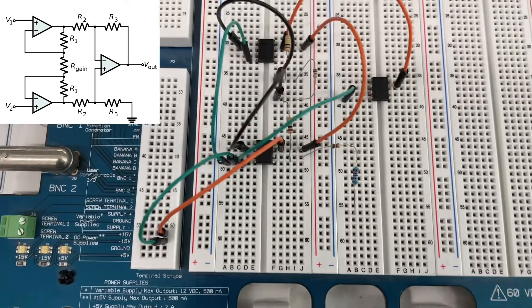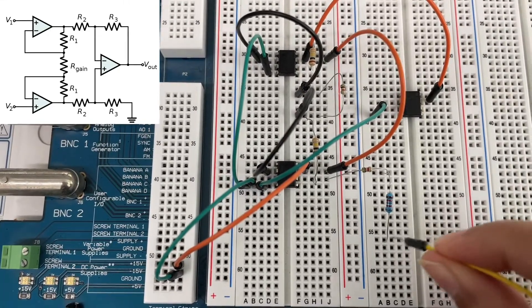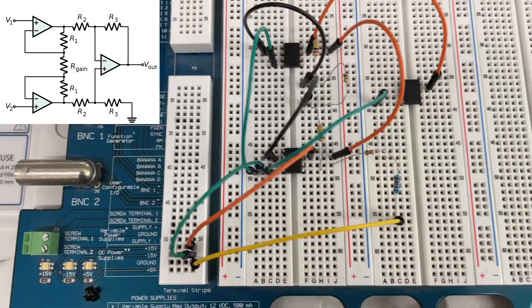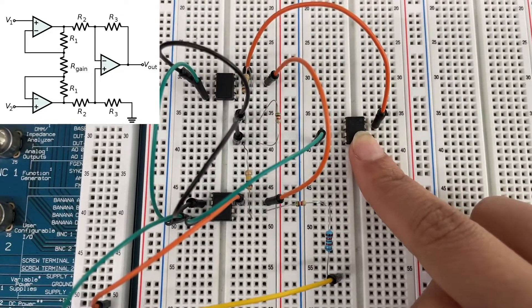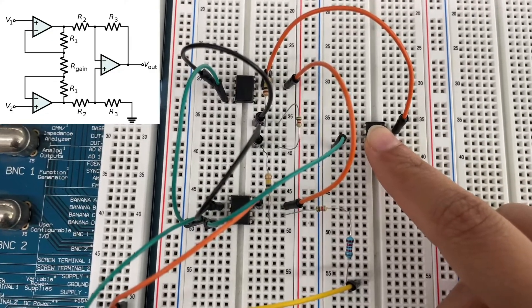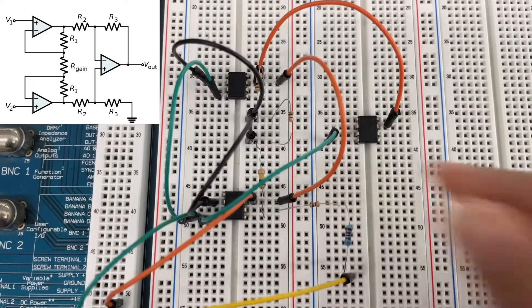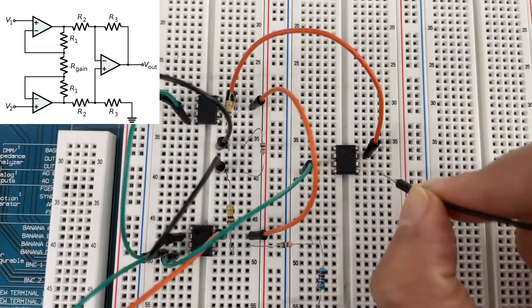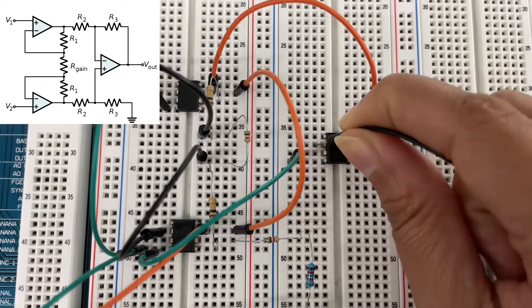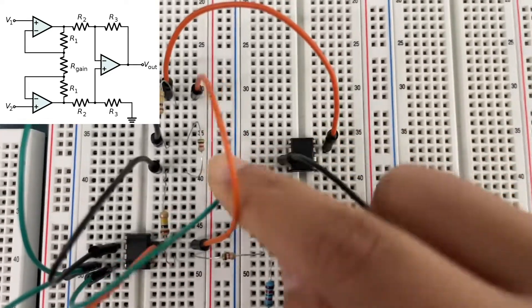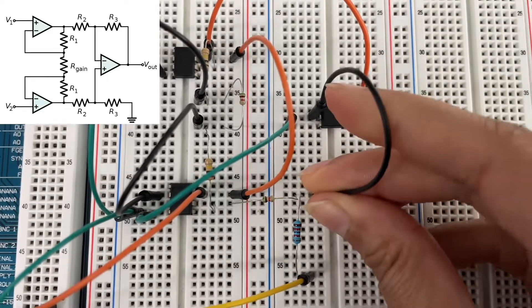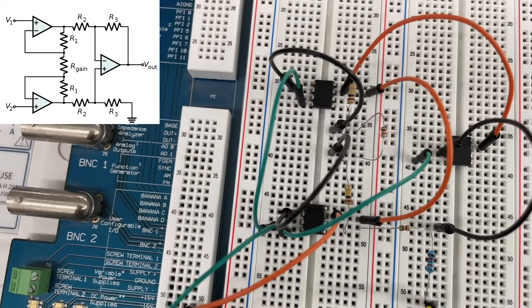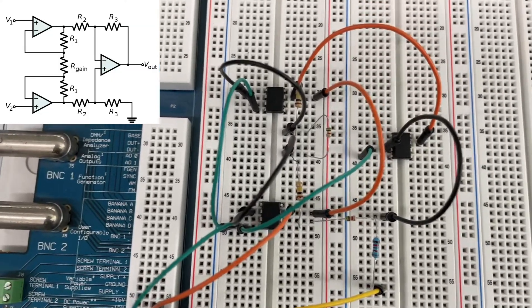I'm going to connect R3 to ground in yellow. From pin three a wire goes to be in between R2 and R3. Use colors to make debugging easier. Pin number two of the last op amp goes between R2 and R3 of this op amp.